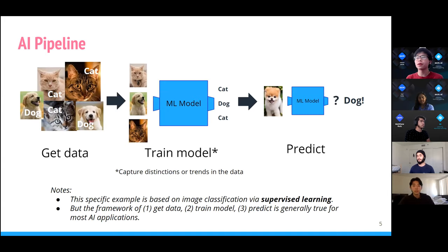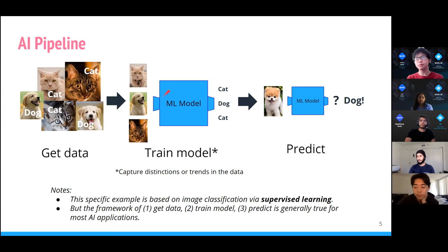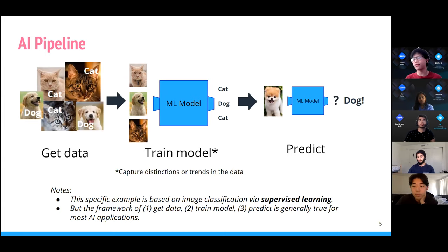Another distinction between reinforcement learning and supervised learning: in supervised learning you always have the answer — this image is a cat, this is a dog. In reinforcement learning you may not know the best course of action. For example, in a robotics application where a robot asks 'how do I walk?' — you don't have an answer, but you can tell it that was a good action or a bad action, reinforcing positive behavior.